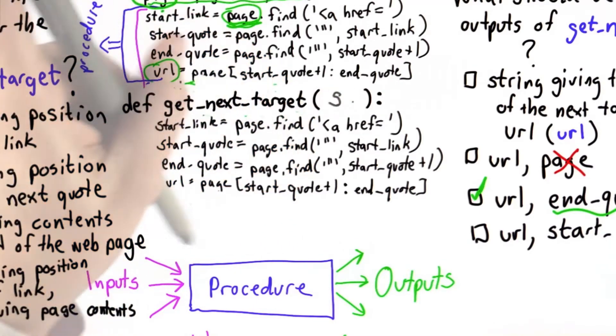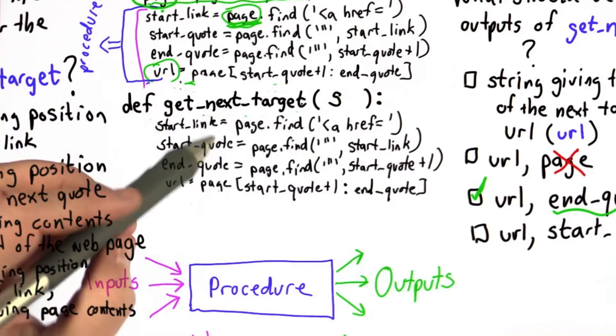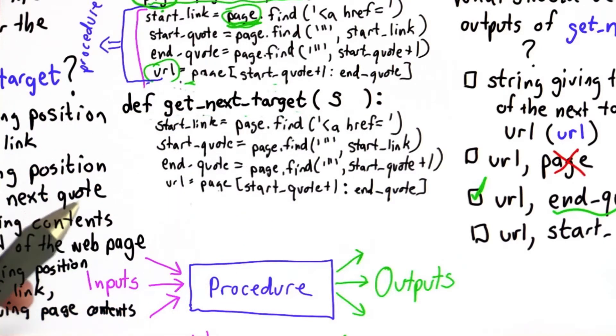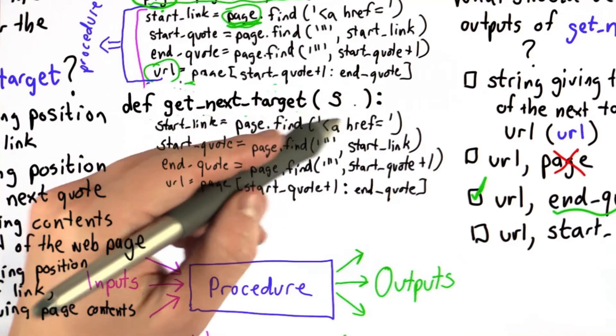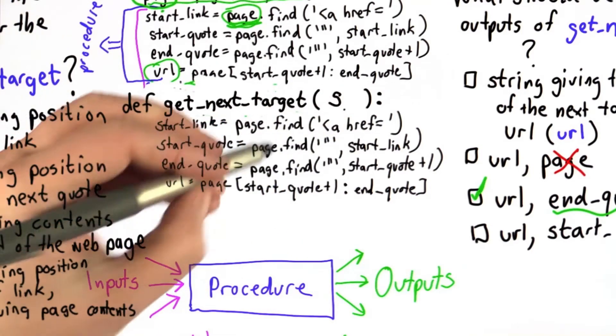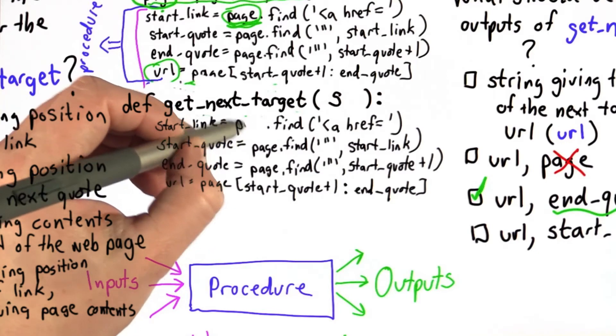We'll change the name to s. If we change the name of the parameter, everywhere that we use page, now we don't have the value of page. What we have is the value of s, which is the name of the parameter. So we'll change all of those to s as well.